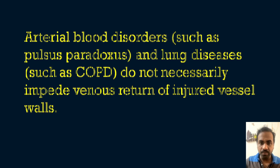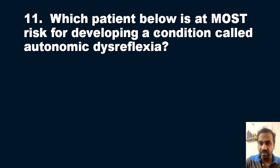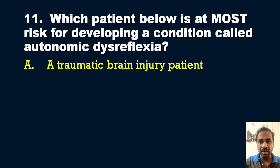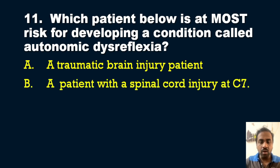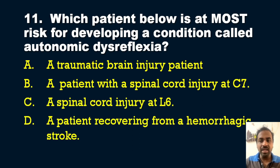Question eleven: Which patient is at most risk for developing autonomic dysreflexia? Options: A) A traumatic brain injury (TBI) patient, B) A patient with spinal cord injury at the level of C7, C) A spinal cord injury at the level of L6, D) A patient recovering from hemorrhagic stroke. The answer is option B — a patient with a spinal cord injury at C7.